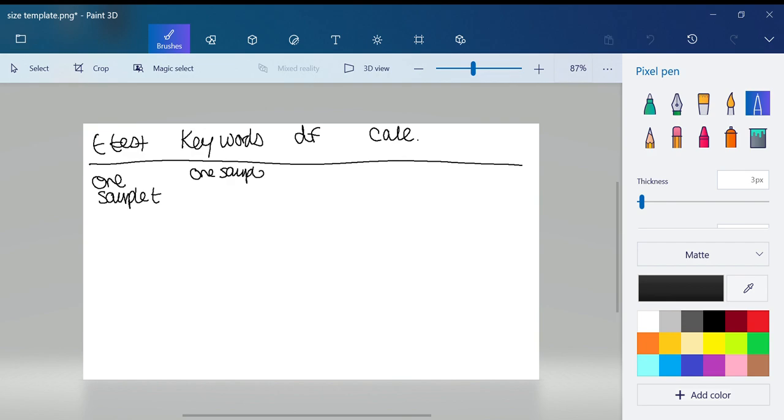If you have one sample T, the key words is going to be something like one sample. So a sample of people drank tea and they were compared to, and usually it'll say something like a known average. So if there's a known average, then we're just going to take that one sample and compare it to a known average. You're not going to see two samples.